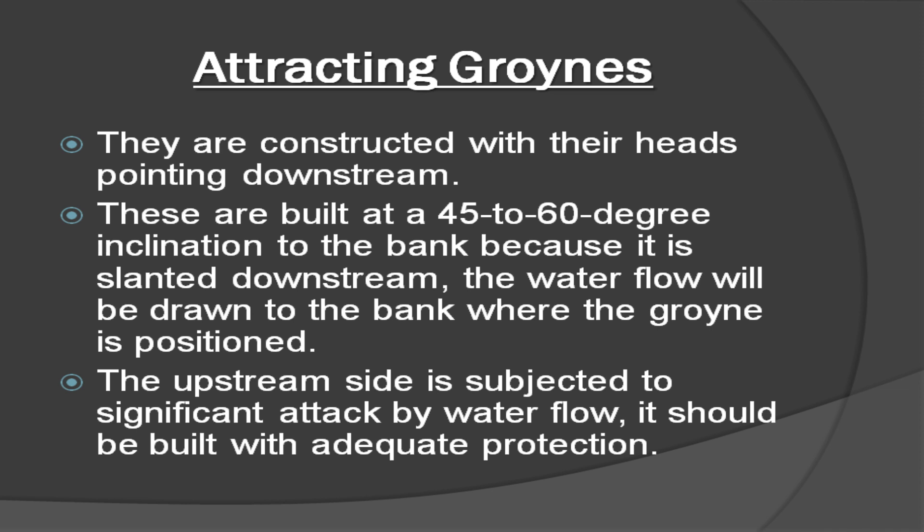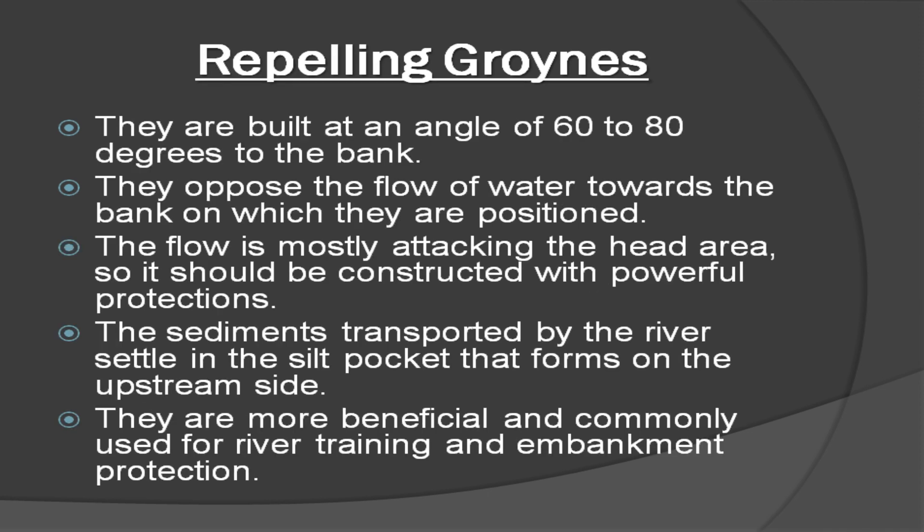Attracting groins are constructed with their heads pointing downstream, built at a 45 to 60 degree inclination to the bank. Because they are slanted downstream, water flow is drawn toward the bank where the groin is positioned. The upstream side is subjected to significant attack by water flow, so it should be built with adequate protection.